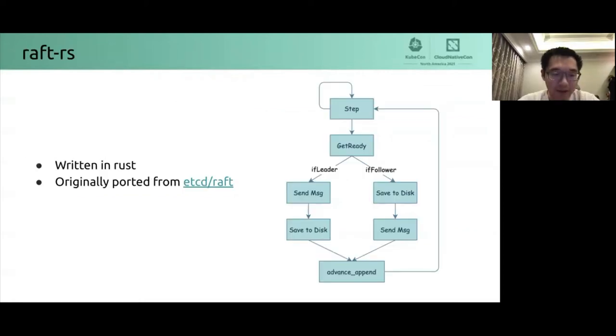Raft-RS were written in Rust and originally ported from etcd Raft. It is essentially a state machine. Events, such as sending messages, saving to disk, are done by external modules, such as store threads in TiKV.